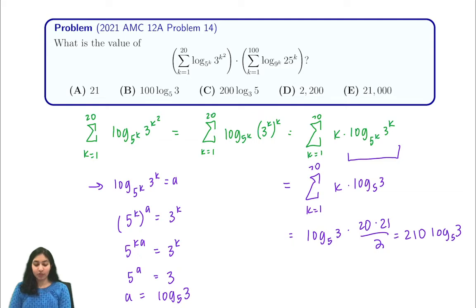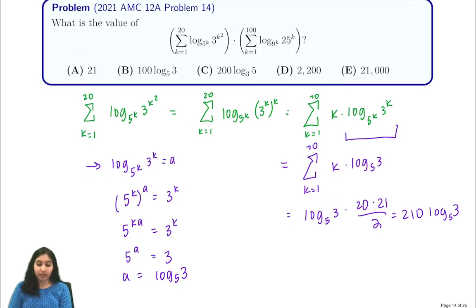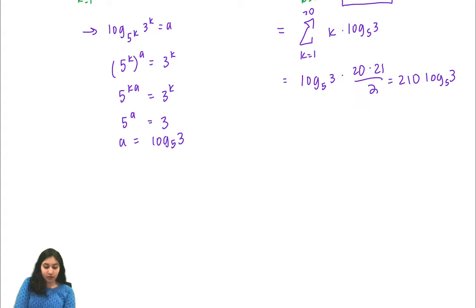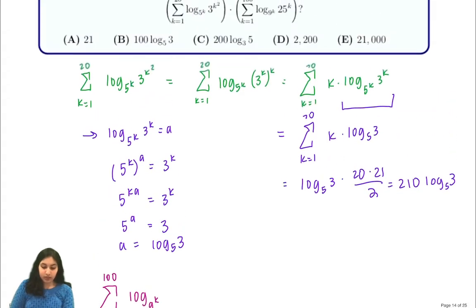So that's our first expression. Now we're going to move on to calculating our second expression. Our second expression I will rewrite down here is from k equals 1 to 100 of log base 9 to the k of 25 to the k.